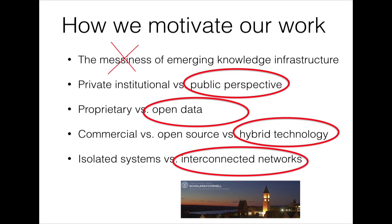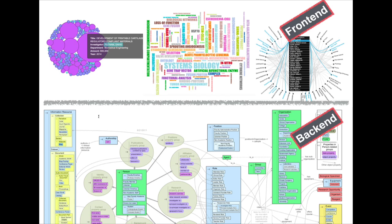We're hanging in there and saying we can tame the messiness. We're taking a public perspective on the data, unlike Pure or Elsevier, which focus more on the institution's needs for reporting and faculty evaluation. We're the library — our role is knowledge. So we're taking a public perspective on Cornell's output, an open data perspective. All the data we have will be made available through linked open data. We're taking a hybrid technology approach — open to open source and commercial systems coming together — and we assume interconnected networks is the world we're playing in.